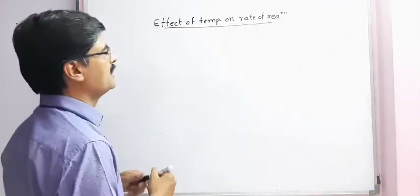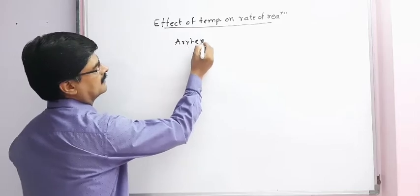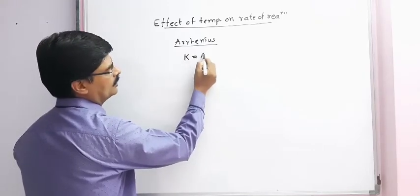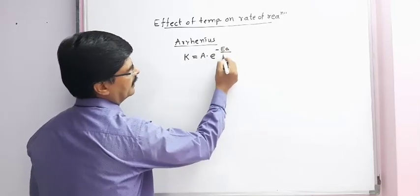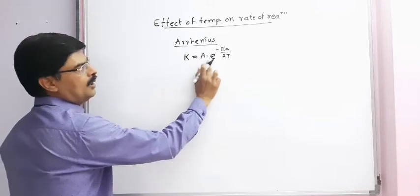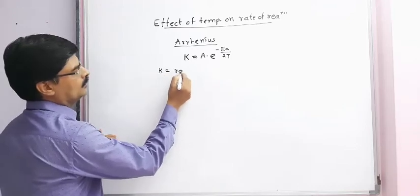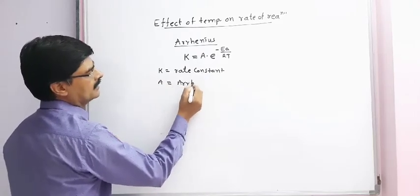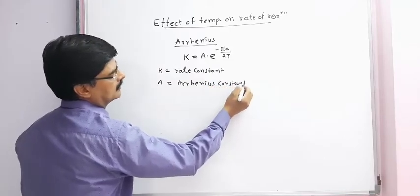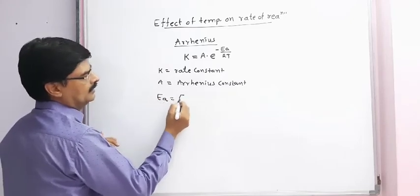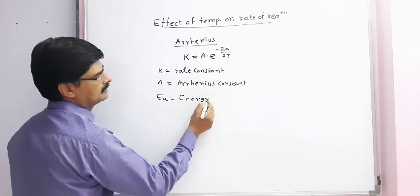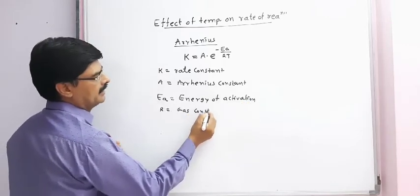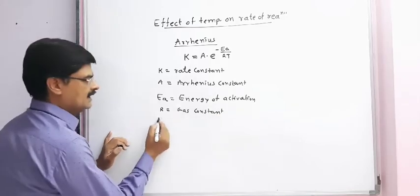The quantitative relation between rate constant and temperature was given by Arrhenius. It is also known as the Arrhenius equation. According to the Arrhenius equation, K is equal to A into e raised to minus Ea upon RT. Here K is the rate constant, A is the Arrhenius constant, Ea is the energy of activation, R is the gas constant, and T is temperature in Kelvin.